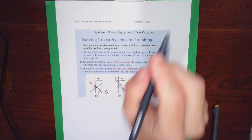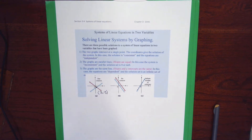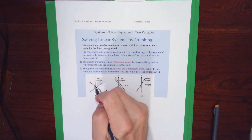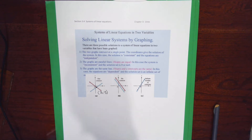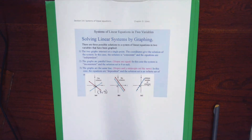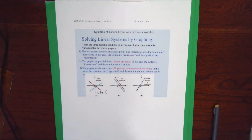Each problem in this section gives two different equations for lines. When graphing them — or determining theoretically what happens — there are three possibilities. The most common is that the two lines cross and meet in one point. When that happens, we describe the answer to the system of equations. This is the most common outcome when solving systems of two linear equations.